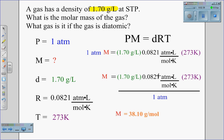In this case, we notice that atmospheres will cancel, liters will cancel, Kelvin will cancel, and we will end up with grams per mole, which is the value for molar mass.